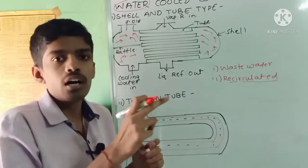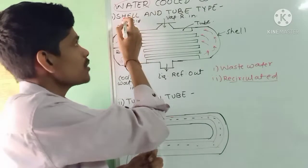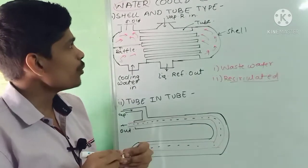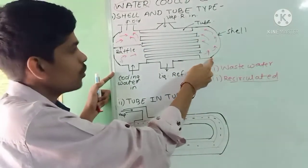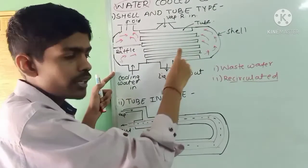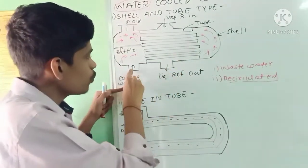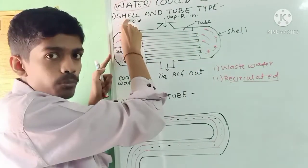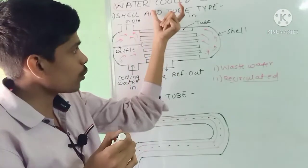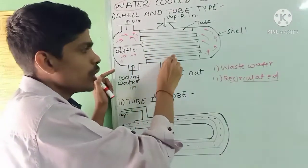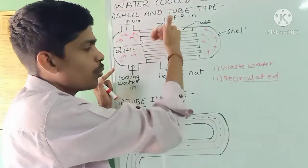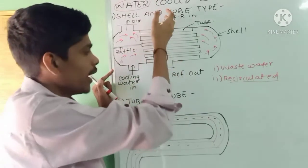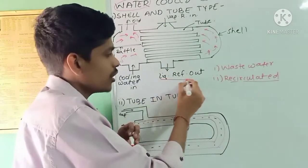There are three types of water-cooled condensers. The first is the shell and tube type. It consists of a cylindrical shell with a number of tubes arranged inside. Cooling water flows through the tubes, entering and exiting via baffle plates. Vapor refrigerant enters from the top and moves over the tubes. The cooling water absorbs the heat from the vapor refrigerant, which gets cooled and converted into liquid refrigerant.